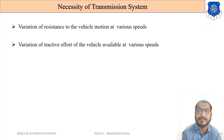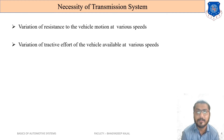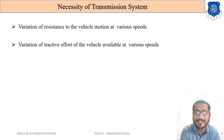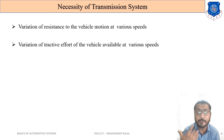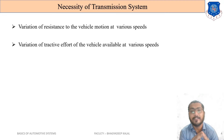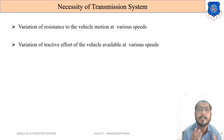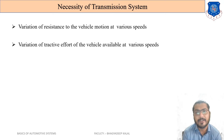The necessity of the transmission system is due to the variation of resistance to vehicle motion at various speeds. Our requirement is that the vehicle moves at different speeds — 10 km/h, 60 km/h, 150 km/h, or 200 km/h — according to our requirement. With the help of the transmission system, we can achieve various speeds in our vehicle.